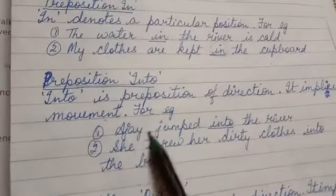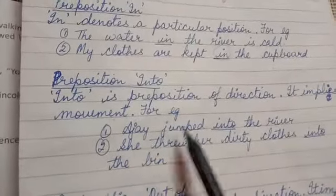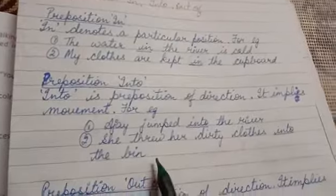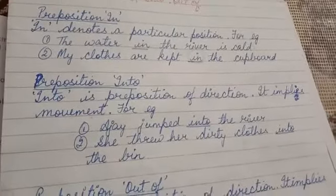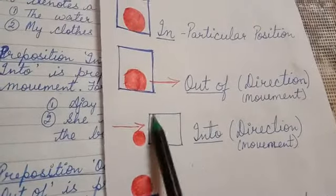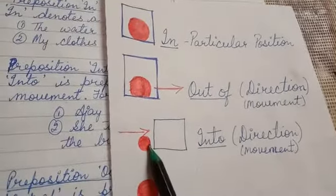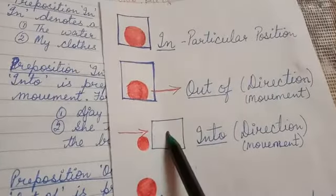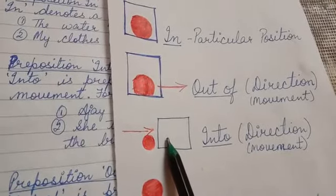Ajay jumped into the river — he will not jump 'in' the river, he will jump 'into' the river. She threw her dirty clothes into the bin — this is movement. When I am throwing a ball, I will say: I am throwing the ball into the box. Into — direction, movement. I am throwing the ball into the box.